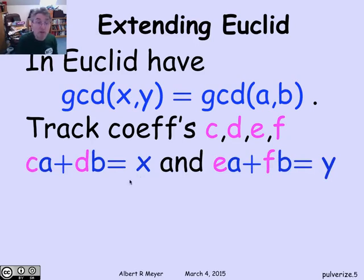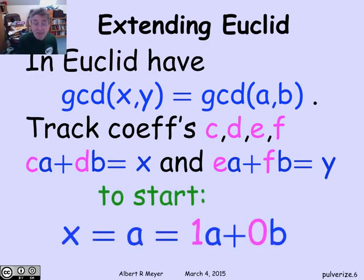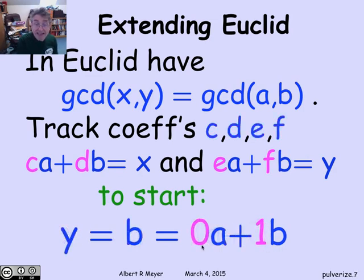Such that the x, whatever we're up to, we know how to express as a linear combination of A and B. And the y, whatever y we're up to, we can also express as a linear combination of A and B. So we're going to be keeping track of these four coefficients, C, D, E, and F, that have this property. This property is going to be another invariant of our extended Euclidean algorithm or pulverizer. Well, how do we get initial values for C, D, E, and F? Well, that's easy. At the start, x is A, and so C is 1 and D is 0, because A is 1A plus 0B. Similarly, y is 0A plus 1B. So we know what these values of C, D, E, and F are at the start of the algorithm. The question is, how do we update them?